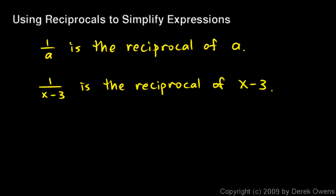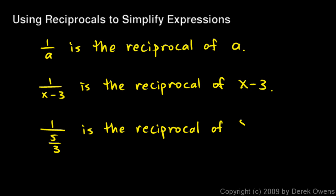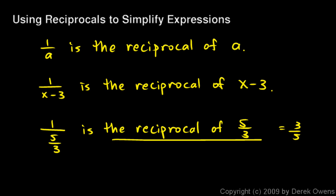Now, what if instead of a mathematical expression, we have a fraction down here? What if we have something like 1 over 5 thirds? Well, by the definition of reciprocal, 1 over 5 thirds is the reciprocal of 5 thirds. And we know that the reciprocal of 5 thirds is 3 fifths. So 1 over 5 thirds has to be the same thing as 3 fifths.